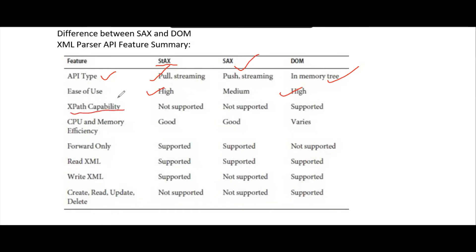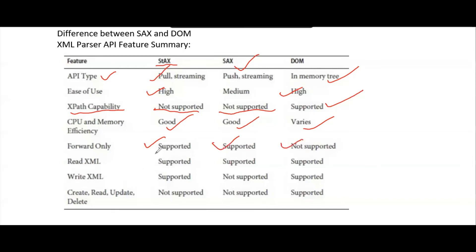Next is XPath capability. XPath is defined by W3C and can be used to compute values from the content in an XML document — strings, numbers, booleans, or anything. XPath is not supported in STAX or SAX, but it is supported in DOM. Regarding CPU and memory efficiency, it is good in SAX and STAX, but it varies in DOM. Forward-only traversal is supported in STAX and SAX, but not in DOM.